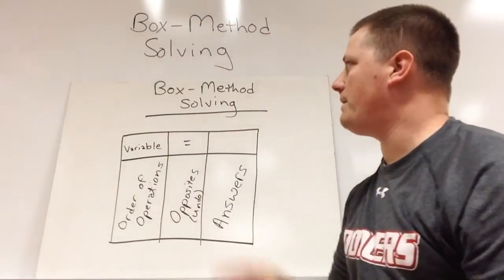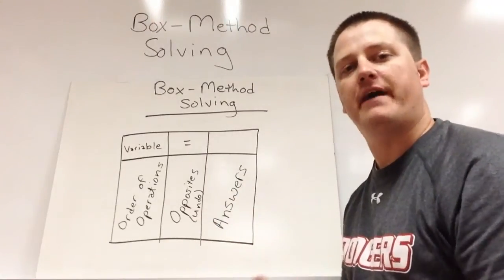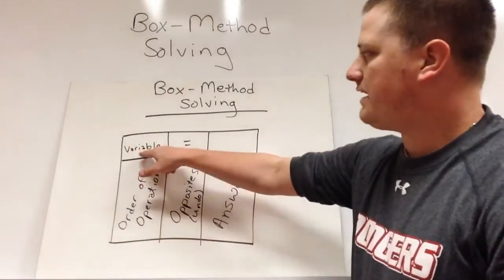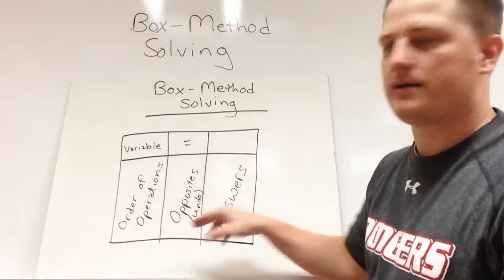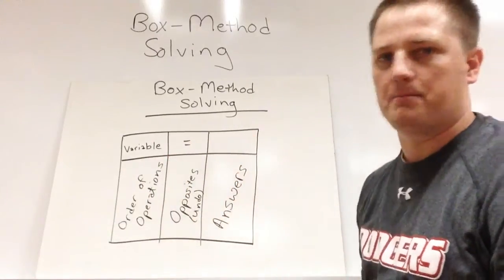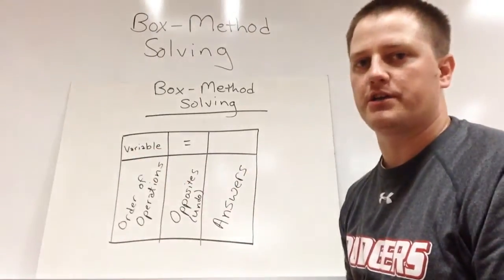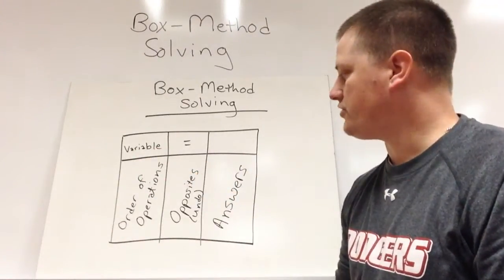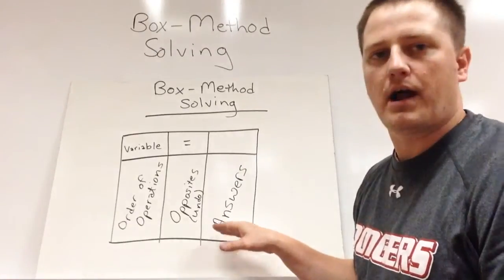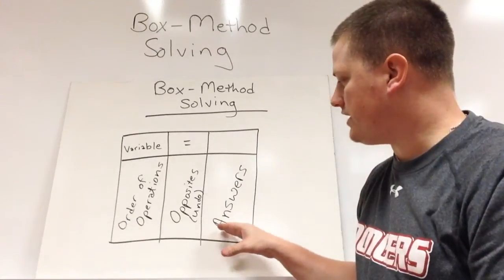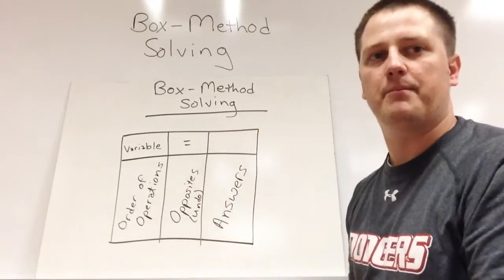First we need to understand what box method solving is exactly. It's really just an organizational tool to help us find out what a variable could be if we solve for it. So our variable will go in the top, and then we'll have equals, and our end result will end up right here. So we'll have, say, x equals some number here. What we'll do is we'll first look at the variable and determine the order of operations that are being shown in our equation. Then we will transfer to our opposites in the middle column. And then we will start with our end result of the equation and we'll work backwards through the opposites to get where the variable started at.